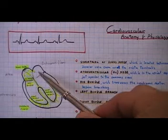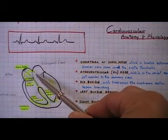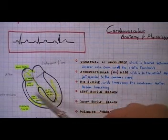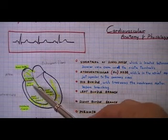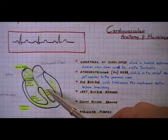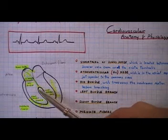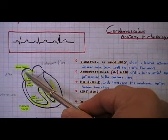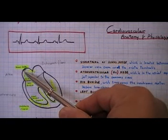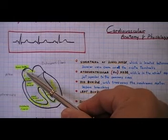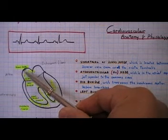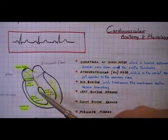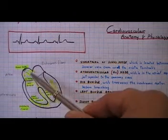In the heart we have the upper chambers called the atria — right atria, left atria. Then we have the lower chambers called ventricles — the right ventricle and the left ventricle. We have to know that the pacemaker of the heart is the sinus node. The sinus node has specialized cells which are going to generate electrical impulses and they are going to travel along the heart.